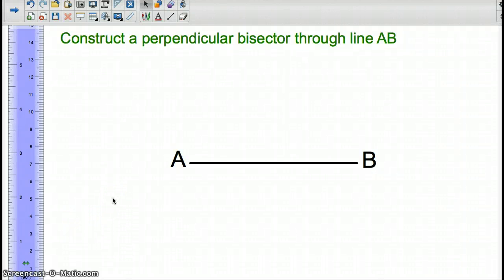Today we're going to learn how to construct a perpendicular bisector through line AB. So we have this random line AB. It doesn't really matter what the size of it is. But what we want to create is a perpendicular bisector.